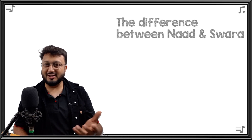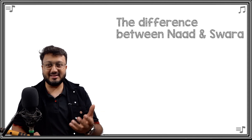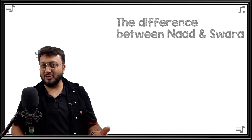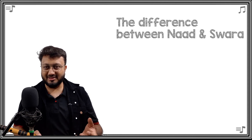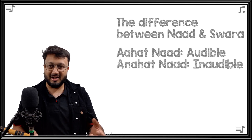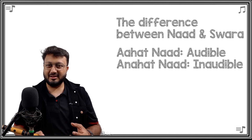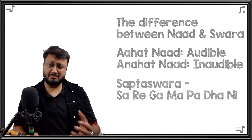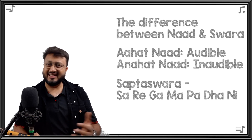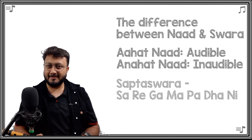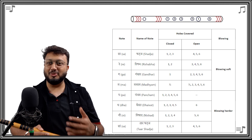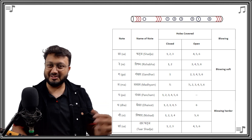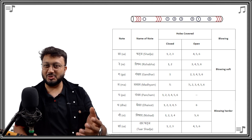We learned the difference between sound (nada) and swara (musical note). Sound that is audible is called ahata nad, while inaudible sounds are called anahata nad. From ahata nad, the seven musical notes we consider are: sa (shadja), re (rishabha), ga (gandhara), ma (madhyama), pa (panchama), dha (dhaevata), and ni (nishada). The finger positions and blowing technique are given in the table on screen, and a PDF link with finger positions has been posted in the description.